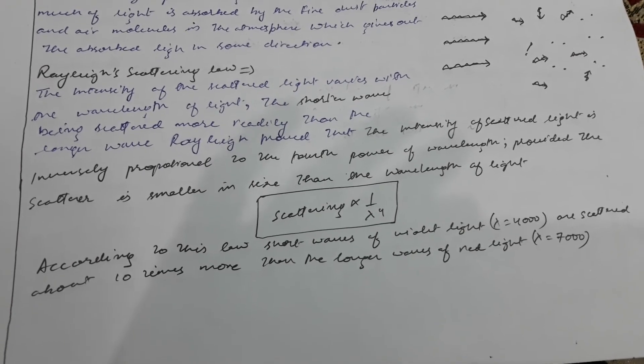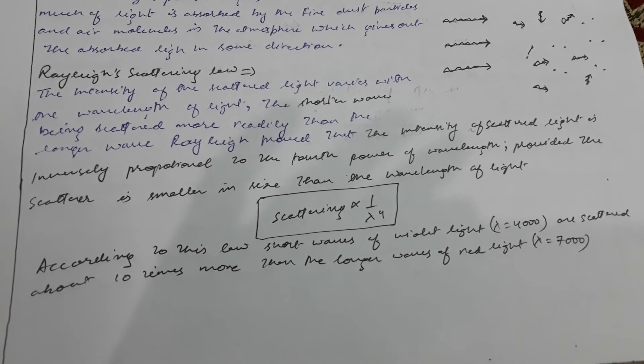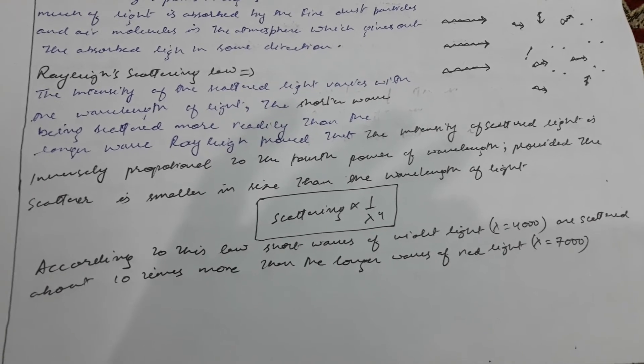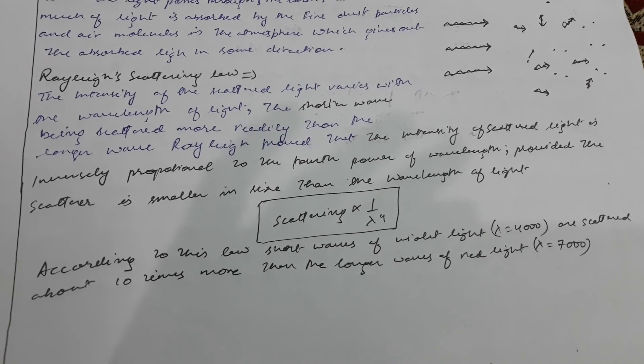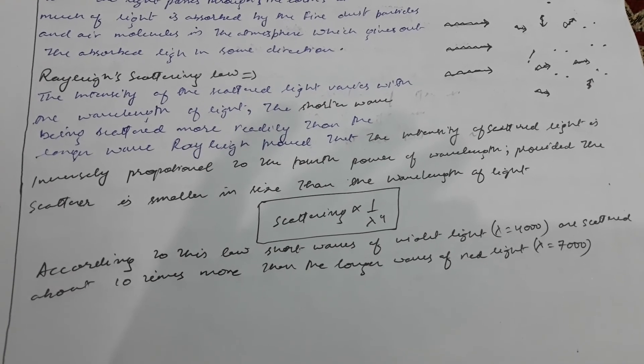short waves of violet light (λ = 4000) are scattered about 10 times more than the longer waves of red light (λ = 7000).